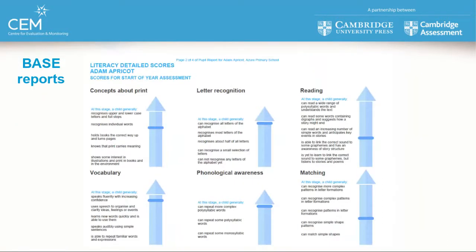In BASE it's possible to drill down more deeply into the information. BASE provides more detailed feedback on the individual learner within what we call the thin strands. So you have the thick strand which is literacy, and then below that you have six thin strands — concepts about print, letter recognition, reading, vocabulary, phonological awareness and matching. This information allows teachers to better understand what this pupil knows and can do. Are there any areas of weakness, opportunities for development, or strengths I as a teacher wasn't aware of? And can I accommodate these pupils' needs within my classroom or do I need help and support from elsewhere?